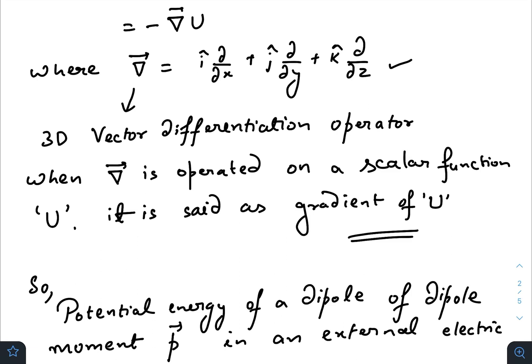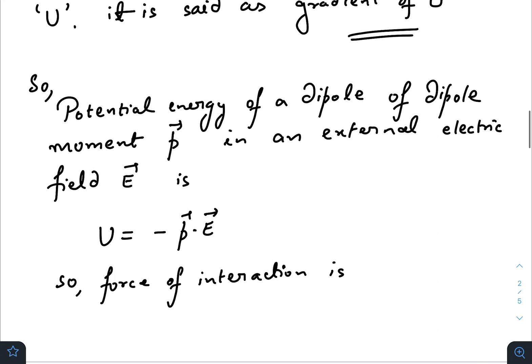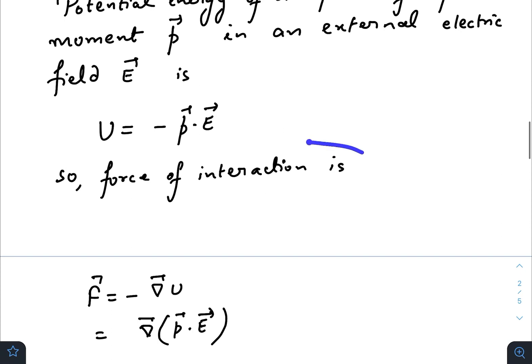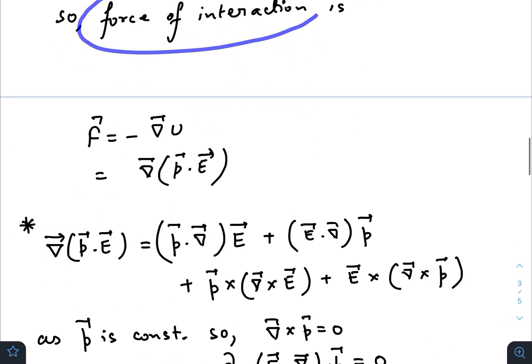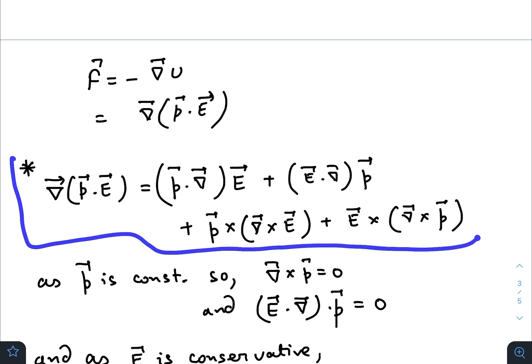Potential energy of a dipole of dipole moment p in an external electric field E vector can be written as minus p dot E. So force of interaction is minus gradient of u, which is this one. If you search good books or the internet or Griffiths, you can check.